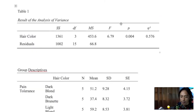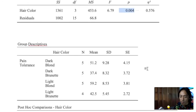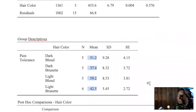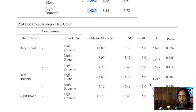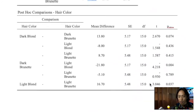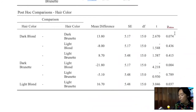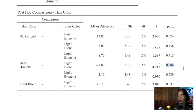Looking at the output, the p-value is significant, which suggests there are significant differences among the group means. The ANOVA tells us that at least one mean is significantly different from the others. To identify which means differ, we ran post hoc tests — specifically Tukey — and the results identify a significant difference in pain tolerance between dark brunettes and light blondes, with a p-value of 0.004.